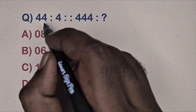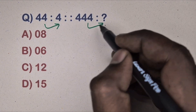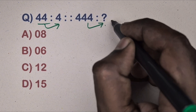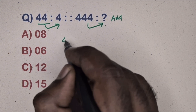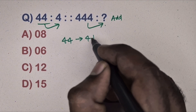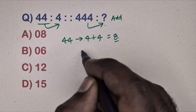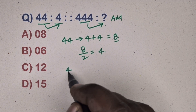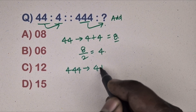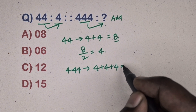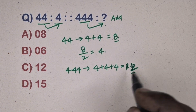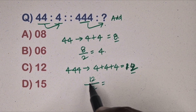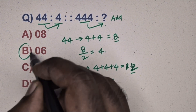Next question: 44 is related to 4, 444 is related to which number? This is the addition method. Take 44, add individual digits to get 8, divide by 2 to get 4. Same way, take 444, add individual digits to get 12, divide 12 by 2 to get 6. Option B is the correct answer.